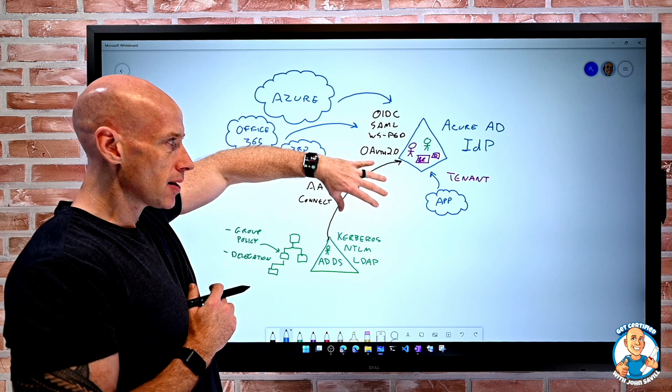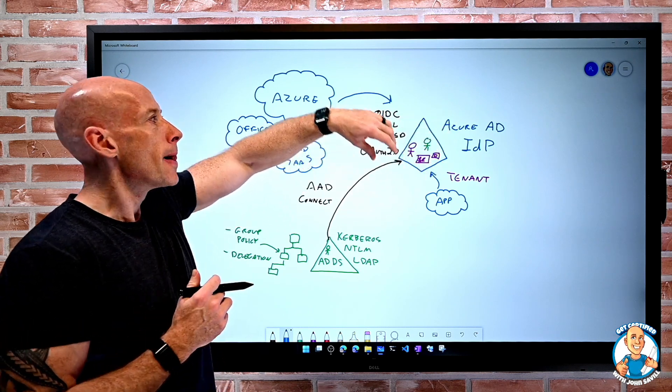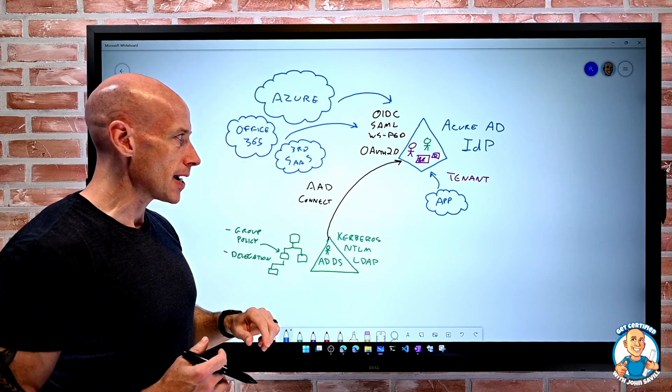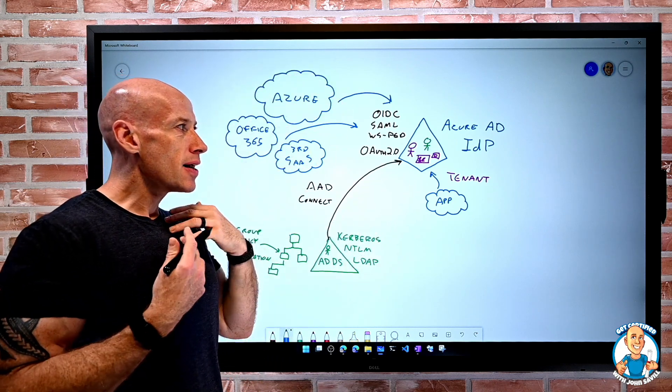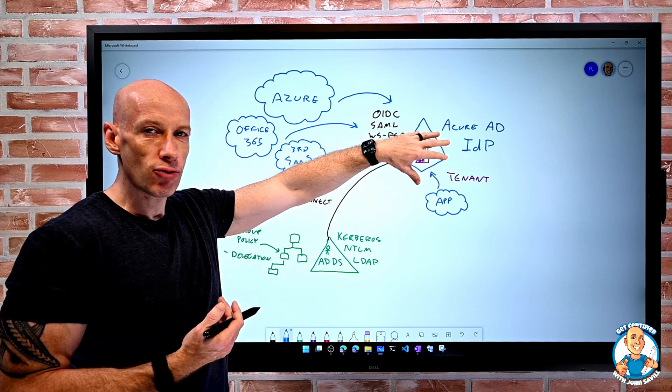The identity becomes this huge thing we have to protect. We have all these accounts, groups, service principals for applications, and applications trusting it. I can enforce things like strong authentication through Azure AD with MFA.